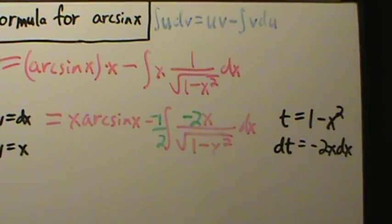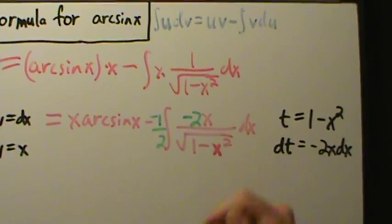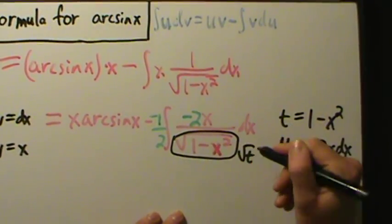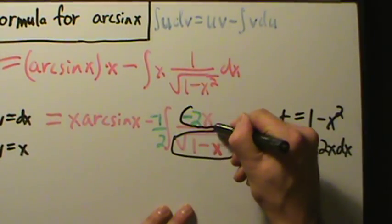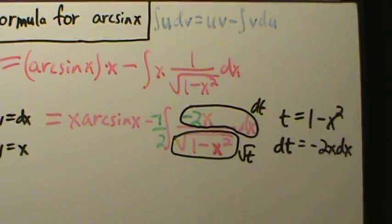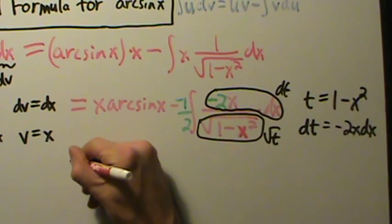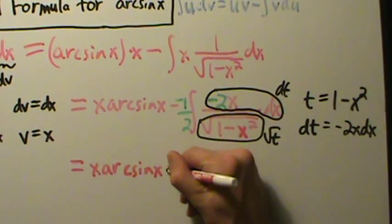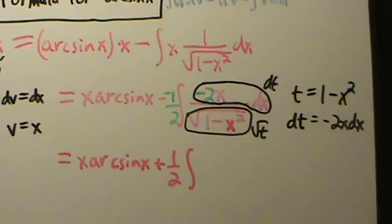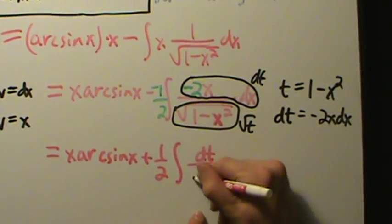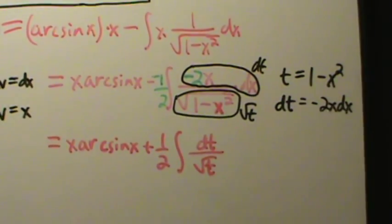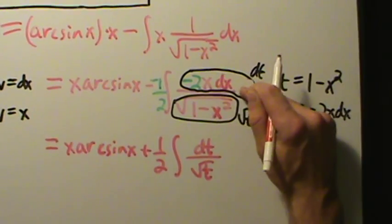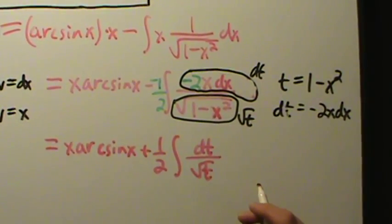So continuing, this is x arc sine of x. Minus negative one-half means plus one-half. And the integral becomes: dt on top and square root of t on the bottom, since t equals 1 minus x squared and negative 2x dx equals dt. Note that dx off to the side is the same as putting it in the numerator — that's why it's okay to write dt on top.